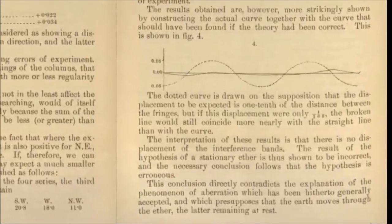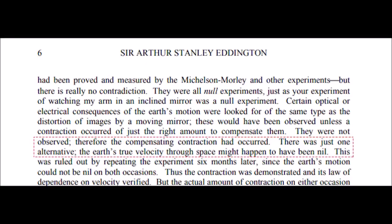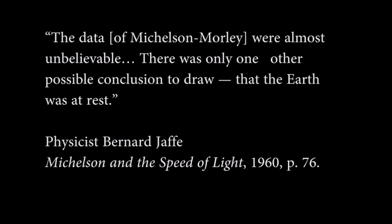Other prominent physicists have noted the same truth. There was just one alternative. The earth's true velocity through space might happen to have been nil. Physicist Arthur Eddington. The data of the Michelson-Morley test were almost unbelievable. There was only one other possible conclusion to draw. That the earth was at rest. Bernard Jaffe.